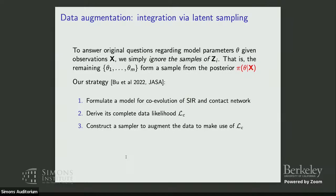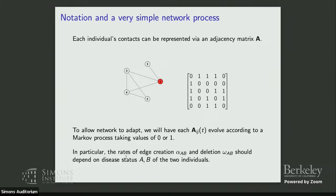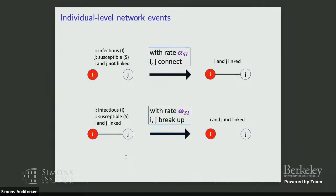Now let's talk about incorporating a contact network that co-evolves with the SIR model. Say we have five people and a non-complete graph represented by an adjacency matrix. To make this dynamic, that matrix A should itself be a Markov process where entries switch between zero and one. The rates of contact formation and deletion depend on disease status — that's the minimum coupling to have the network interplay with the epidemic. With some rate alpha, nodes connect; with some rate omega, they break their link — both rates depending on the disease statuses of the nodes.